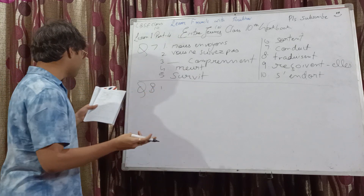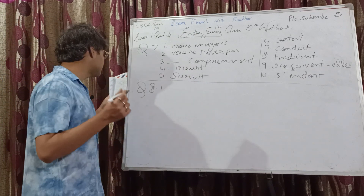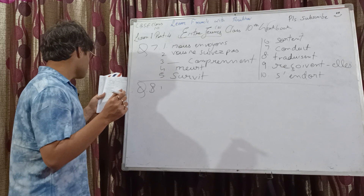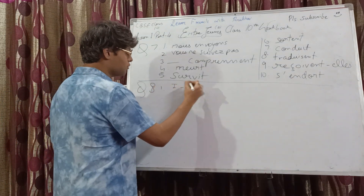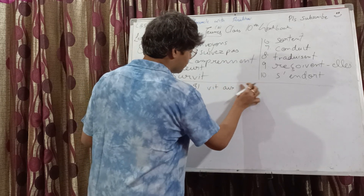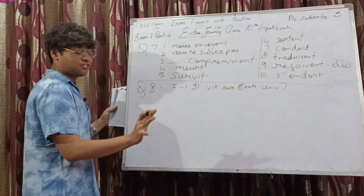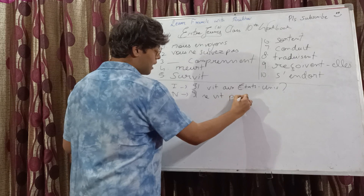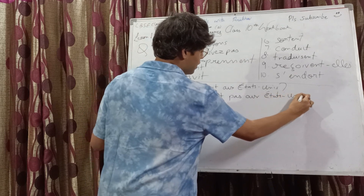Question 8, first part: Il vit aux États-Unis — he lives in the USA. For interrogative using intonation, you simply write the affirmative statement as it is and add a question mark — Il vit aux États-Unis? For negative: Il ne vit pas aux États-Unis.